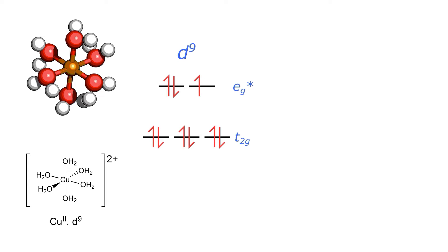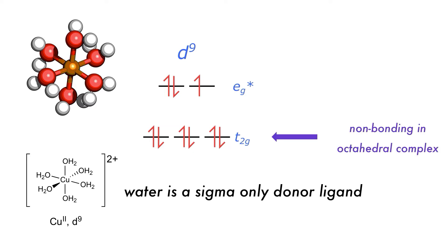For an octahedral complex we have five frontier orbitals which are split into three orbitals which have the symmetry t2g, the triply degenerate dxy, dxz and dyz orbitals. In the case of a complex like the hexa-aqua-copper, water is a sigma-only ligand so the t2g orbitals are non-bonding. The eg orbitals are strongly anti-bonding with respect to the metal ligand sigma bonds, the dz-squared and the dx-squared minus y-squared.